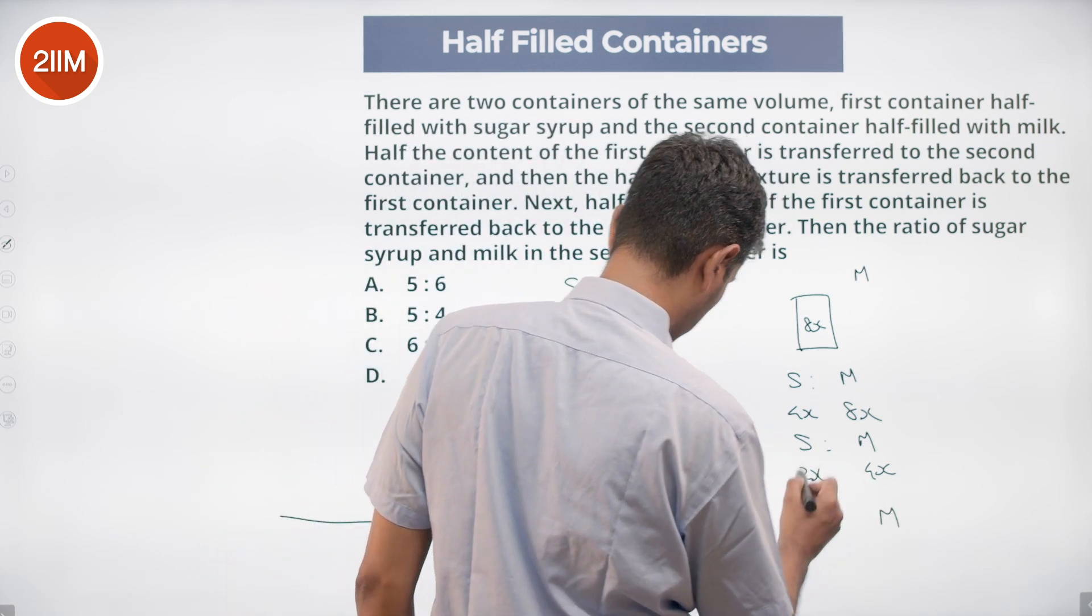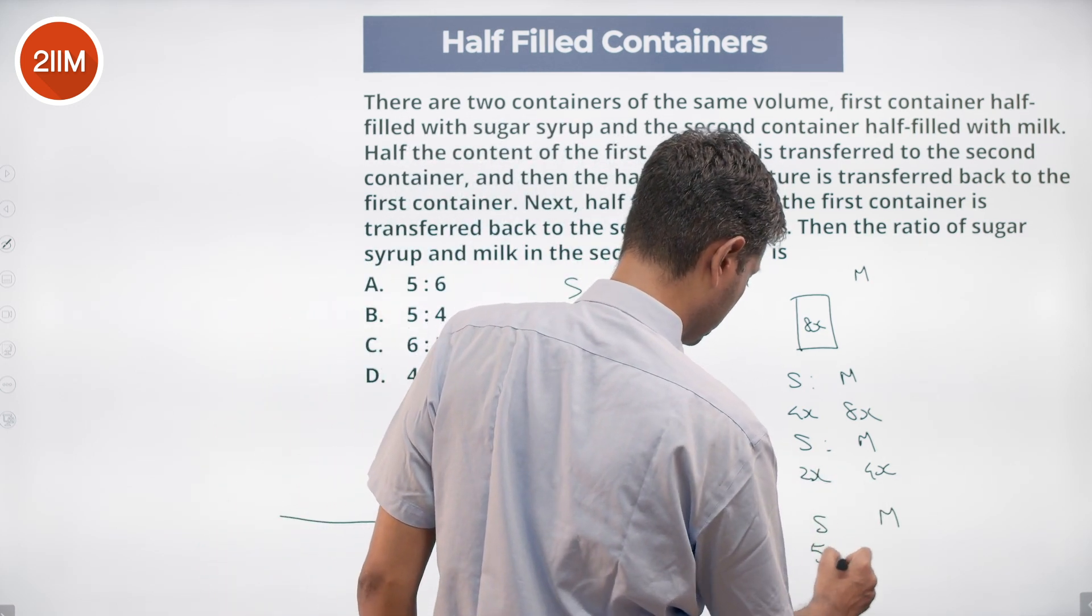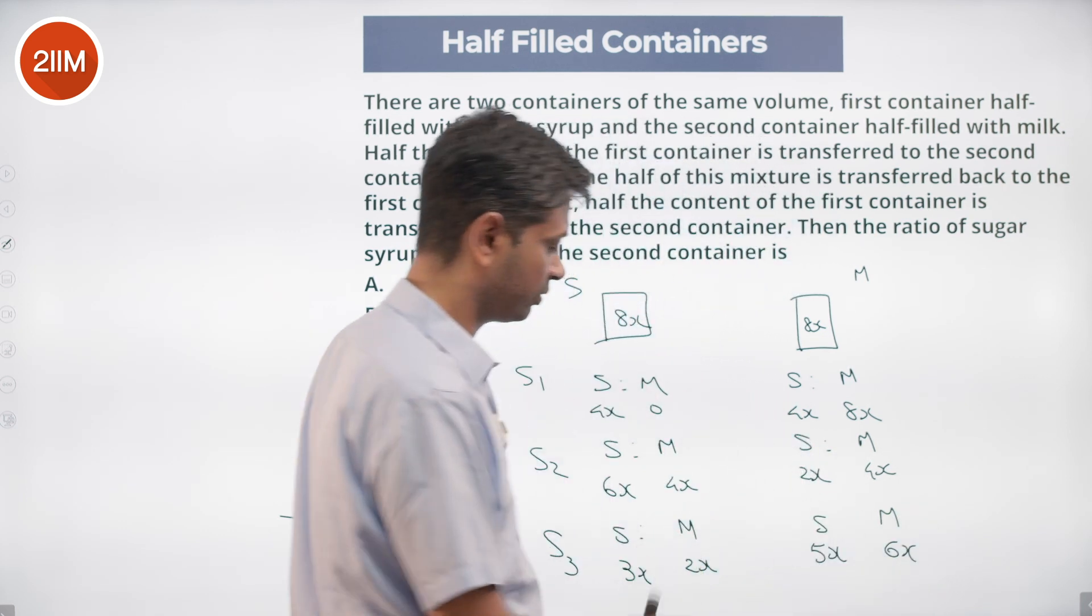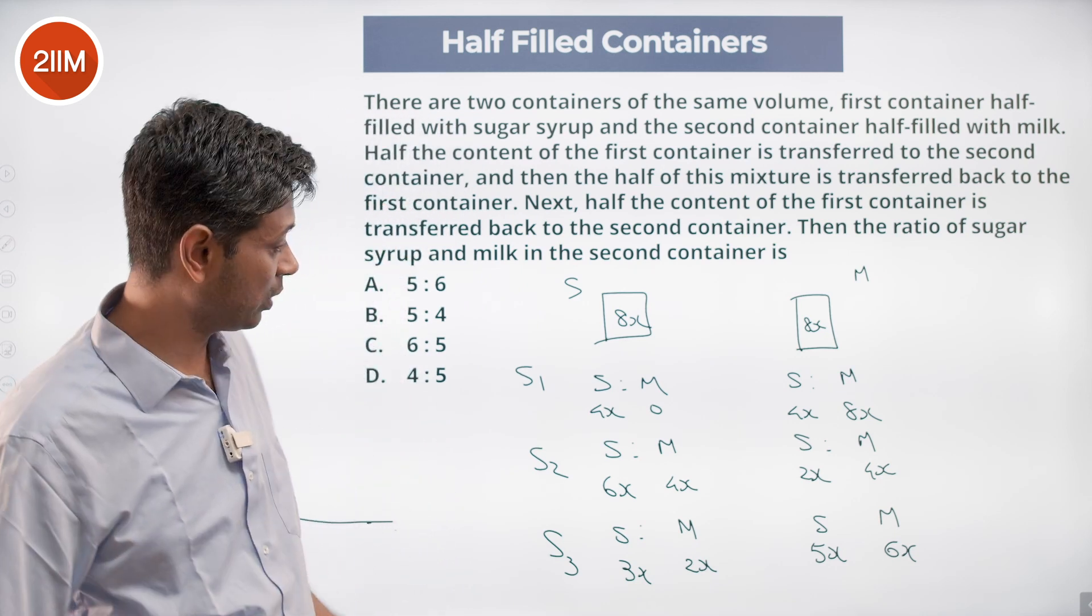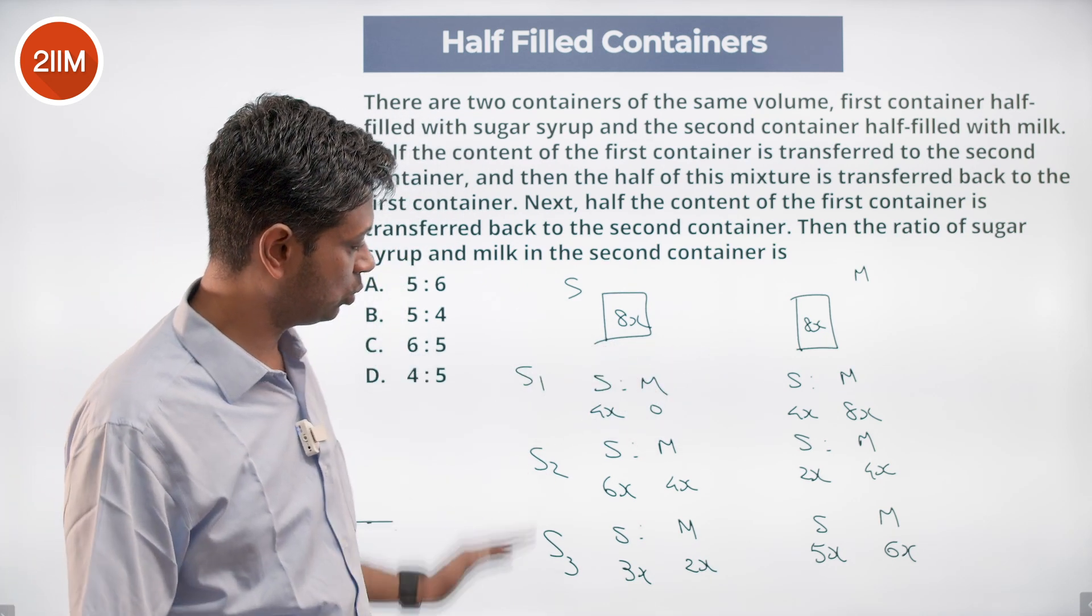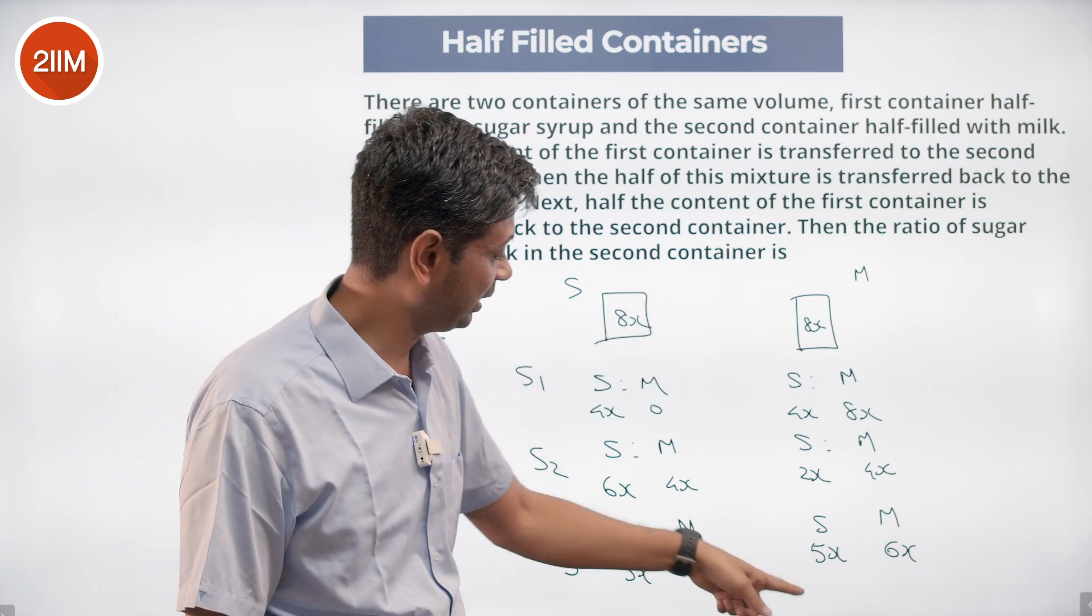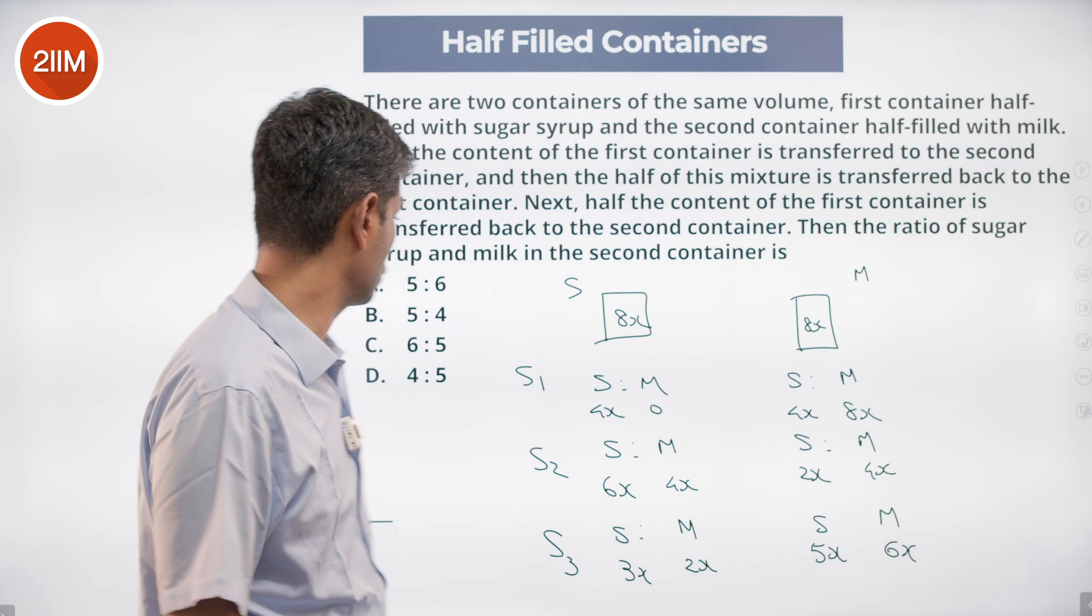Sugar to milk: 2x plus 3x is 5x, 4x plus 2x is 6x. This is 11, this is 5, adding up to 16. That also seems to work. Step 1, step 2, step 3. Ratio of sugar to milk in the second container at the end of this is 5 is to 6.